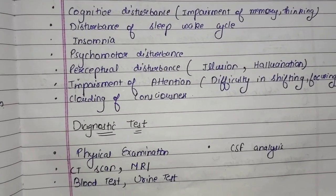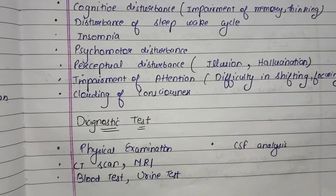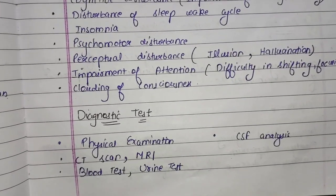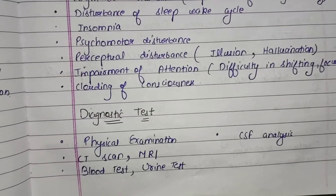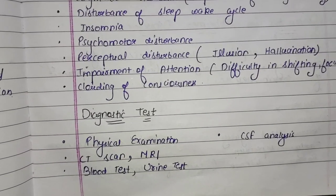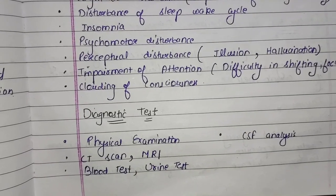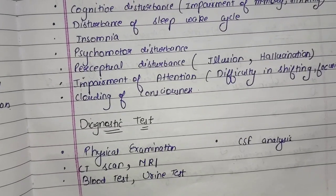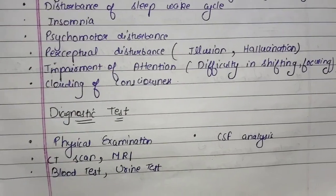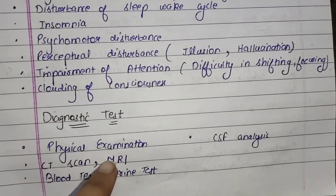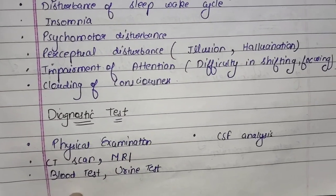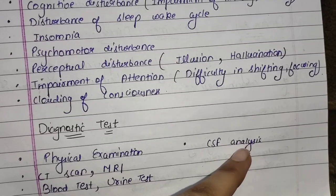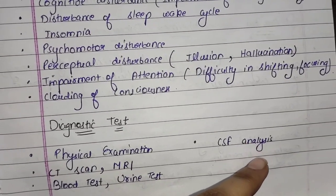Next we will study about diagnostic tests used to diagnose organic brain disorder, mainly delirium. The first is physical examination, where the person is properly physically examined to detect delirium — checking consciousness, and whether the person's perception is disturbed. Next are CT scan and MRI, as well as blood tests, urine tests, and CSF analysis, where the cerebrospinal fluid is analyzed.